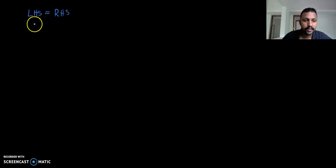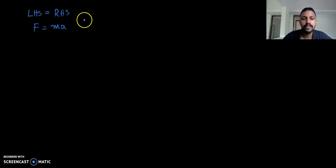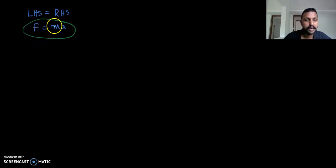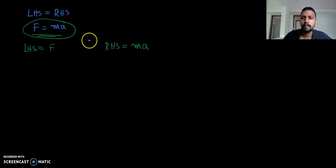As an example, if we have F is equal to MA, this is our equation. In the LHS we have F, that is force, and in the RHS we have mass into acceleration. We know that this equation is correct, but we want to check it by the method of dimensional analysis.